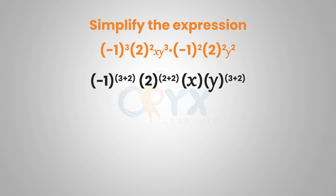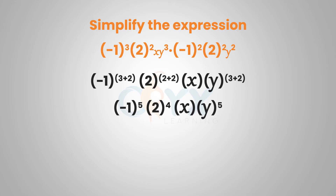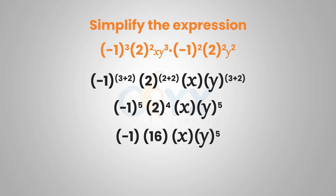We have negative 1 to the 3rd and negative 1 squared — like bases, so we add the exponents: 3 plus 2. We have bases of 2: 2 squared and 2 squared, so we add the exponents: 2 plus 2. There is only one x, so that remains. For the y's, we have y to the 3rd and y squared, so we add those exponents as well. Simplifying, we get negative 1 to the 5th, 2 to the 4th, x, and y to the 5th. A negative number to an odd power is always negative, so negative 1 to the 5th is negative 1. And 2 to the 4th — 2 times 2 times 2 times 2 — is 16. So we get negative 16xy to the 5th.